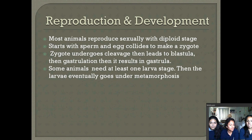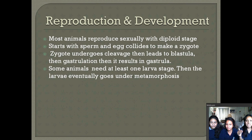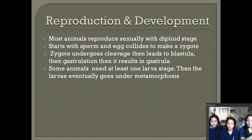Some animals also go through a larval stage, which is a sexually immature stage. They're not completely adults but they're not young either — it's a transition stage. If you compare the larva and the adult, they don't look anything alike. The larva eventually undergoes metamorphosis.